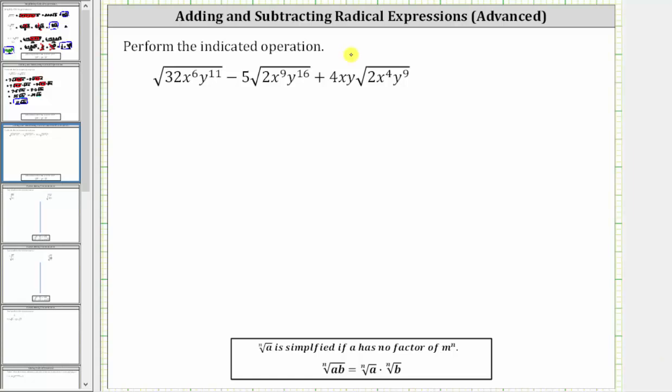We have to perform the indicated operation. The first step is to simplify each square root. To help us do this, we will begin by identifying the perfect square factors of the radicands.